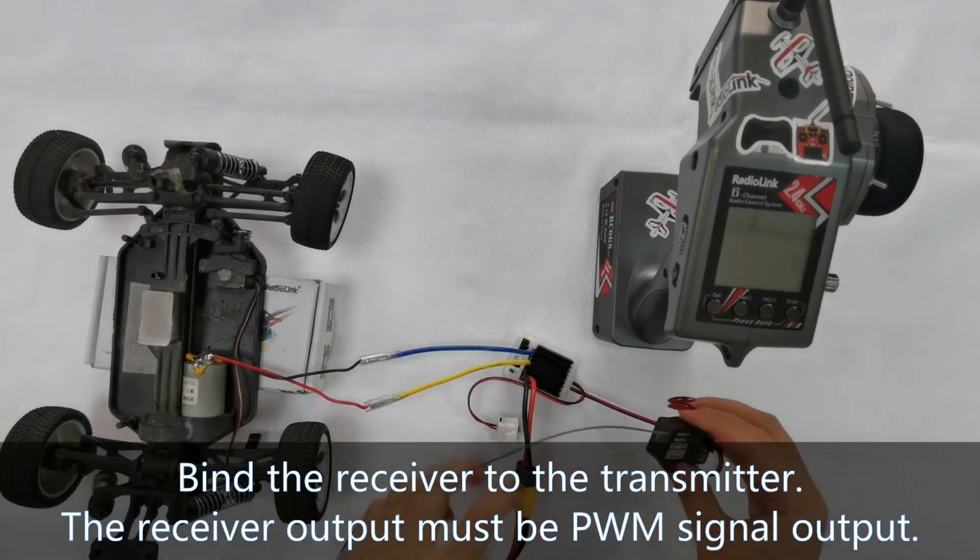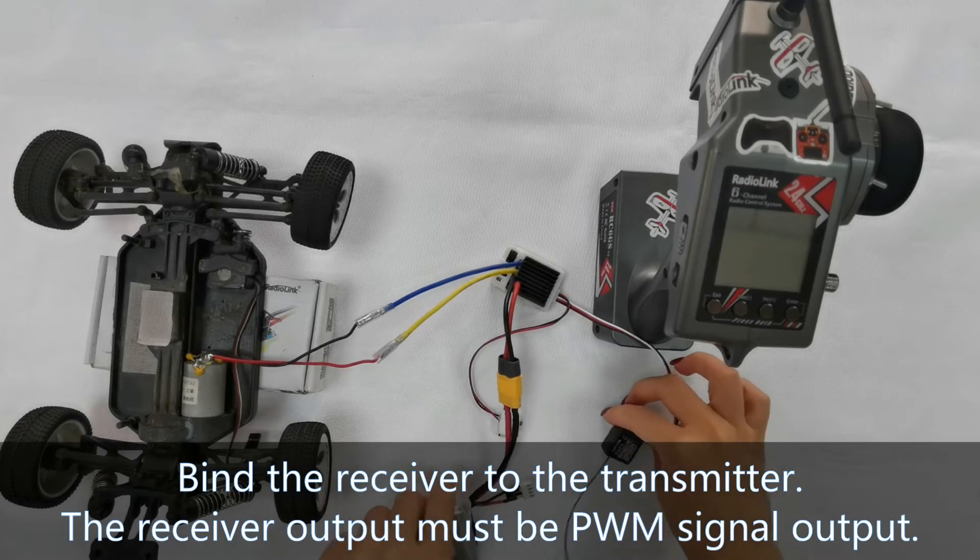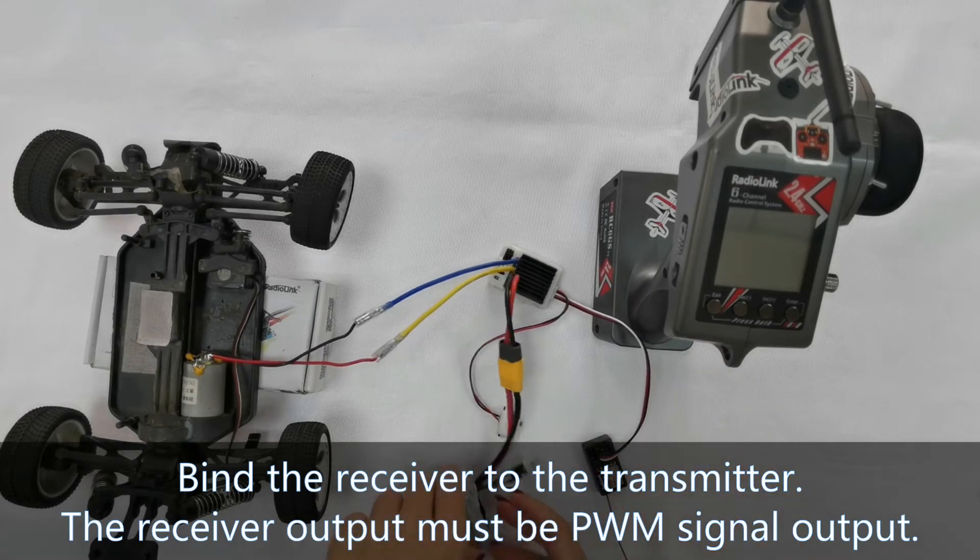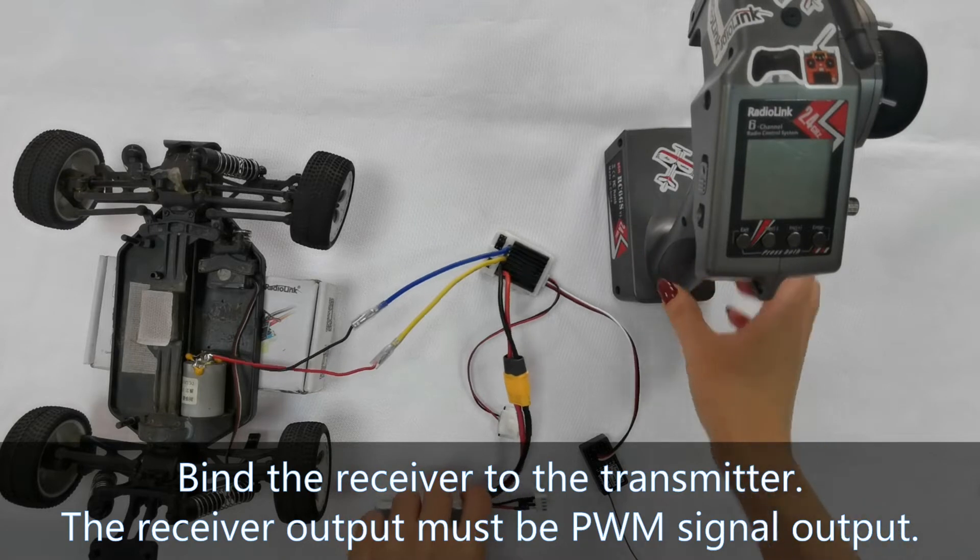The receiver has already bound to the transmitter and the receiver output must be PWM signal output.